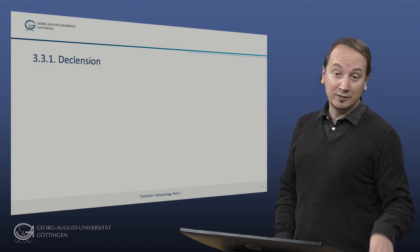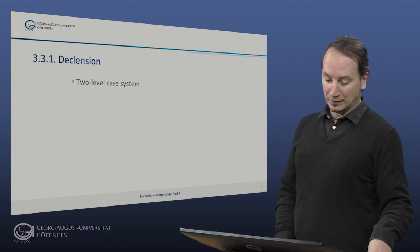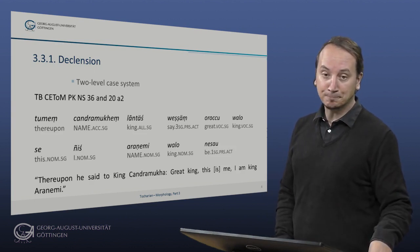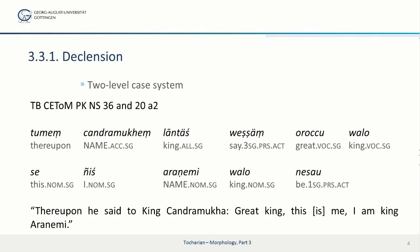So let's have a look at how the two-level case system works in Tocharian. This passage here again is from the Aranemi Jataka, and I will read it to you.